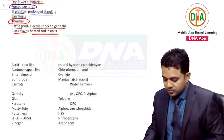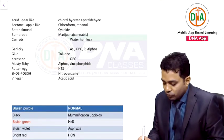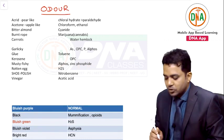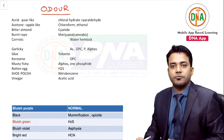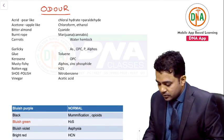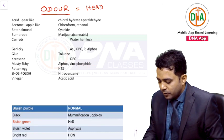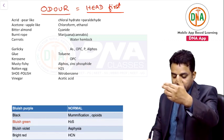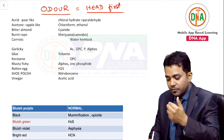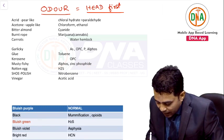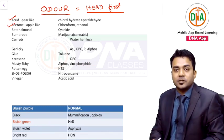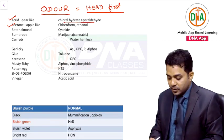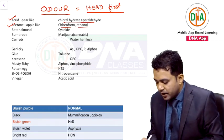Next table is the table of odors of poisons. To get the odor of a poison at autopsy, the head cavity is opened first. This table is arranged alphabetically. Alphabet A: acrid pear-like smell is due to chloral hydrate and paraldehyde; acetone apple-like smell is due to chloroform and ethanol. Alphabet B: bitter almond smell is due to cyanides; burnt rope smell is due to cannabis.